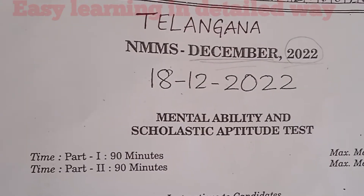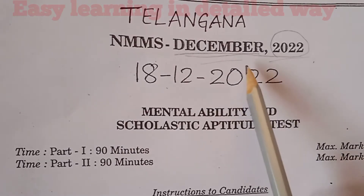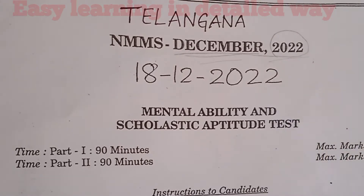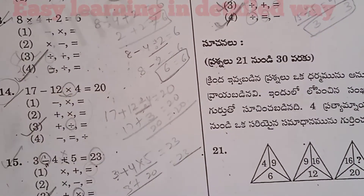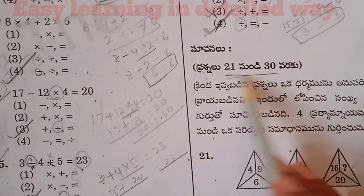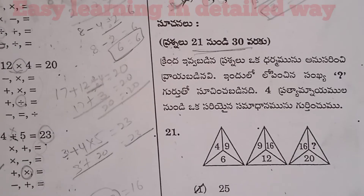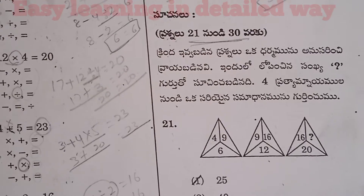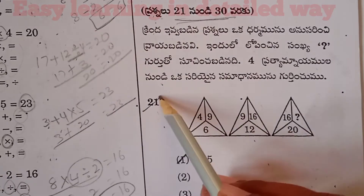Hello everyone, this is Naushak Khan, welcome to my channel Easy Learning in Detailed Way. Friends and dear students, in the NMMS previous questions paper explanation series, we are discussing the Telangana State December 2022 paper. In this particular video, we cover missing characters from question number 21 to 30 — 10 missing character questions in detailed explanation.